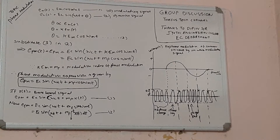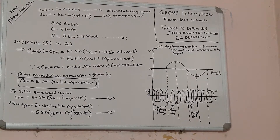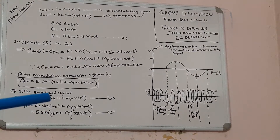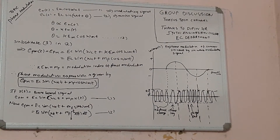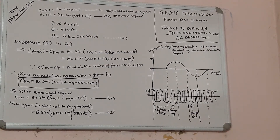The expression for the phase modulated wave is Ec sin(ωct + mp cos(ωmt)). If x(t) is the baseband signal, EPM can be given as Ec sin(ωct + mp·x(t)). We know that the expression for FM is Ec sin(ωct + mf sin(ωmt)), which can be written as EPM = Ec sin(ωct + mf · ∫₀ᵗ x(t) dt). From these two expressions, we can say that phase modulation and frequency modulation are closely related to each other.